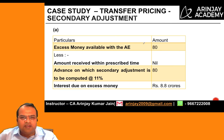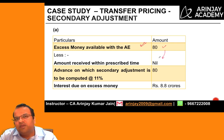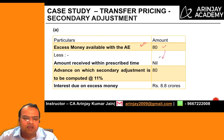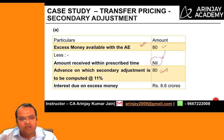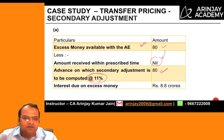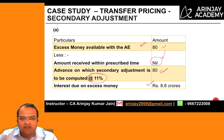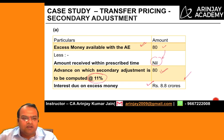The excess money available with the associated enterprise is 80 crores. Assuming nothing was received back within the prescribed time, 80 crores is the amount receivable from the AE. Applying the interest rate of 11% for one year, the amount of interest chargeable is 8.8 crores.